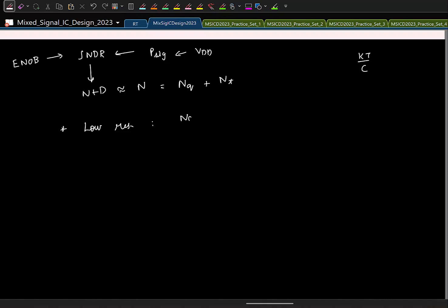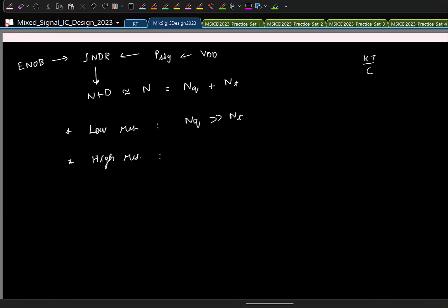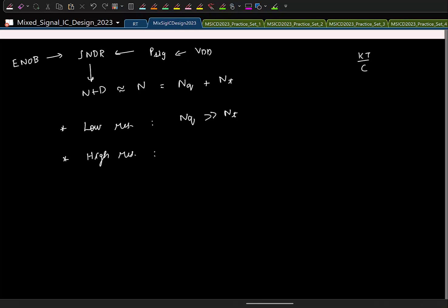When you come to high resolution, the capacitor value will be much higher. In that case, if you want to keep the thermal noise smaller, you have to increase the capacitance value, which means the previous stage has to drive this large capacitor, so power consumption will increase. So in this case, it is usually dominated by thermal noise.